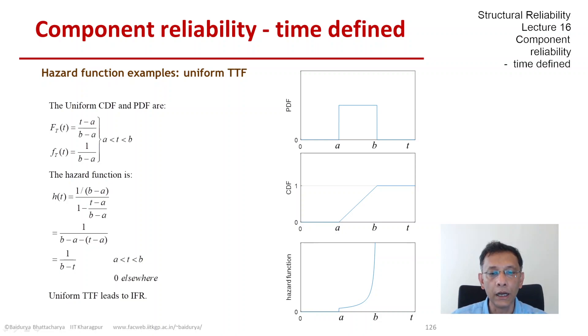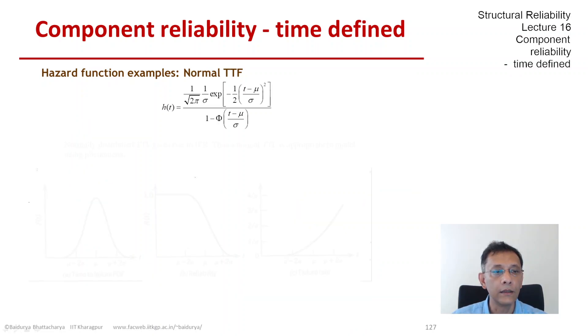Next, we look at the normally distributed time to failure. Obviously, we have to be careful that the normal distribution is defined between minus and plus infinity. But we are talking about the time to failure only taking non-negative values.